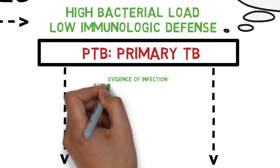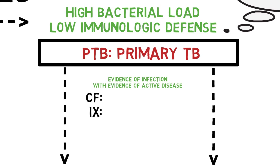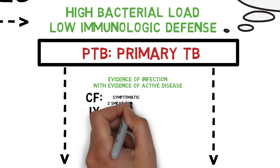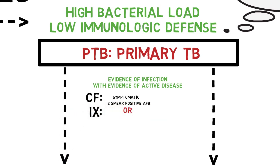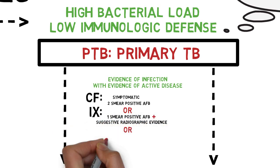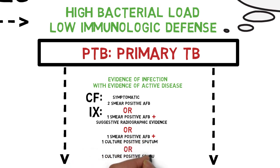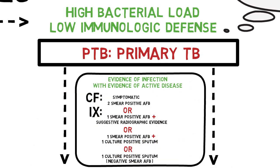For pulmonary TB, there is both evidence of infection and active disease — the patient is symptomatic. Diagnosis requires either 2 smear-positive AFB results, or 1 smear-positive AFB with suggestive radiographic findings, or 1 smear-positive AFB with 1 culture-positive sputum, or simply culture-positive sputum with negative smear AFB. For case reporting per the Malaysian guideline, patients are classified as smear-positive or smear-negative pulmonary TB. Smear-positive patients are highly infectious, requiring more vigorous contact tracing, isolation, and vigilance.